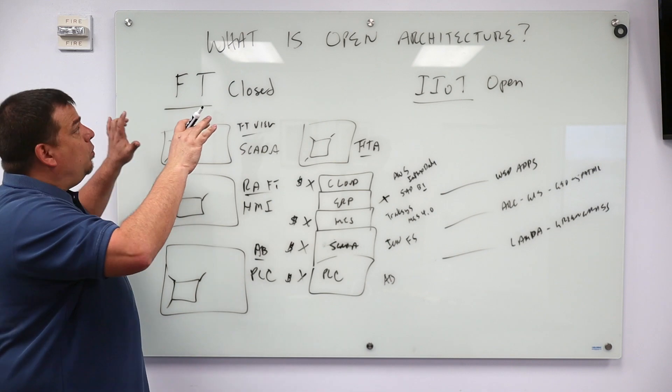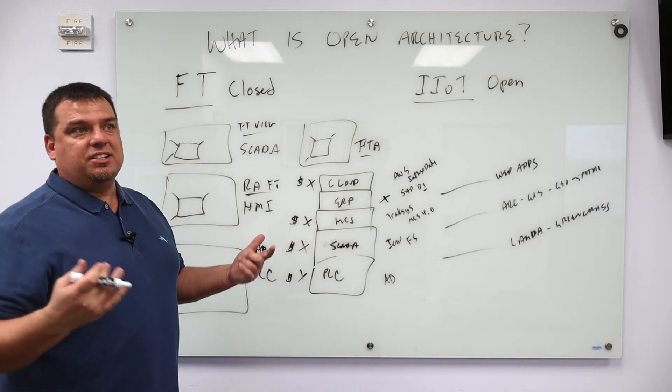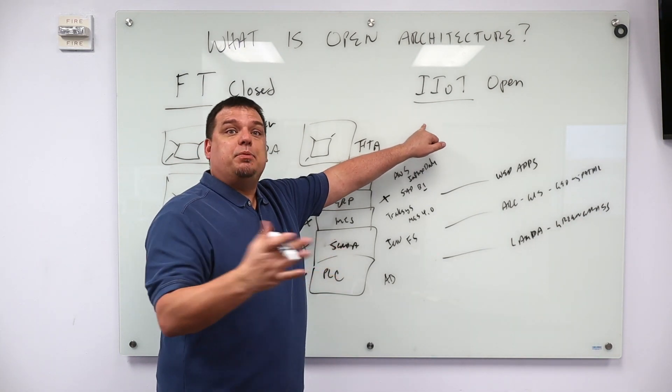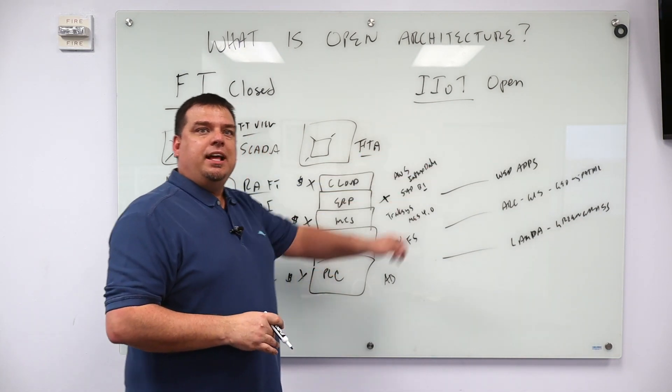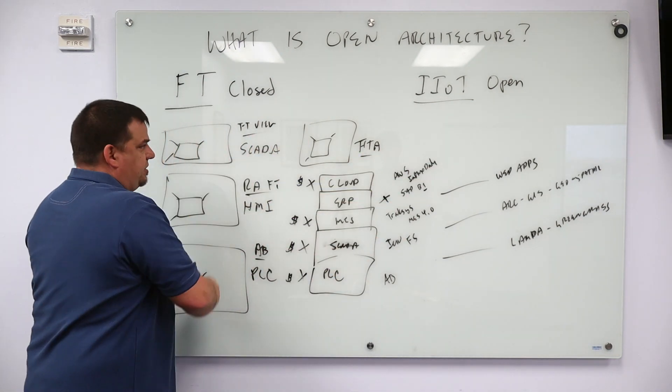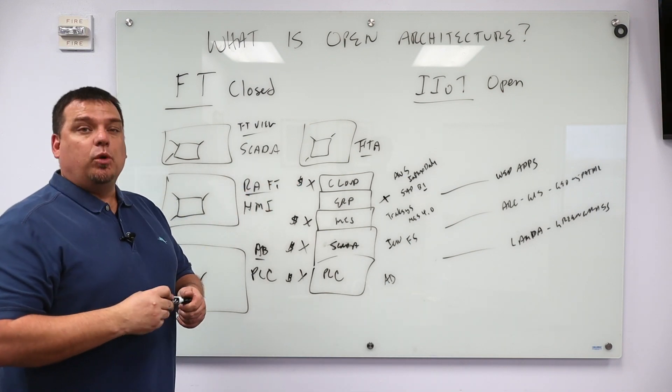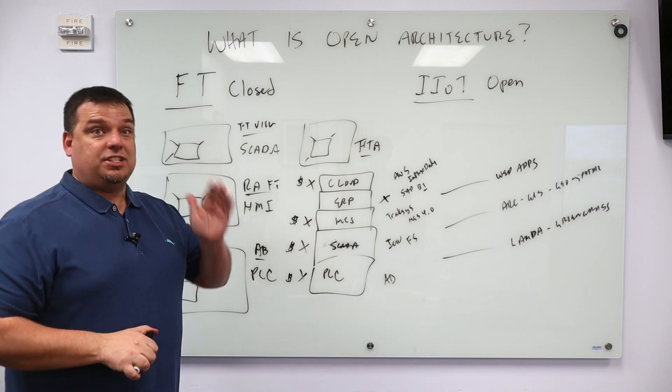That is what is open architecture and honestly why it matters. Open should be 90% of the deployments that we're doing. There are very specific applications where you want to use a closed architecture and there will be fewer and fewer of those applications as we move into the future.